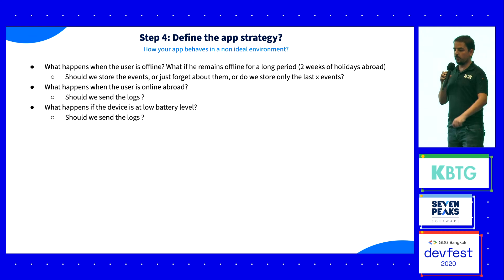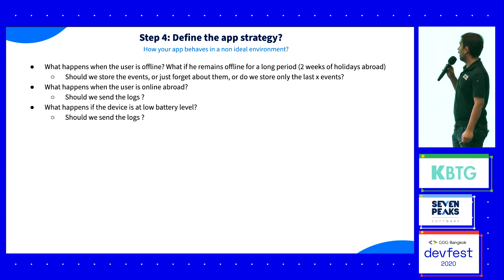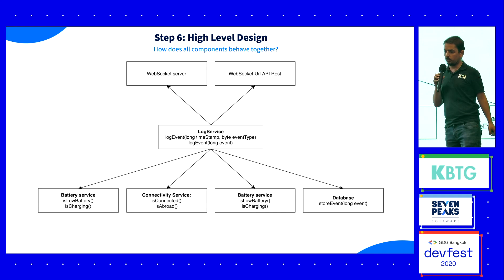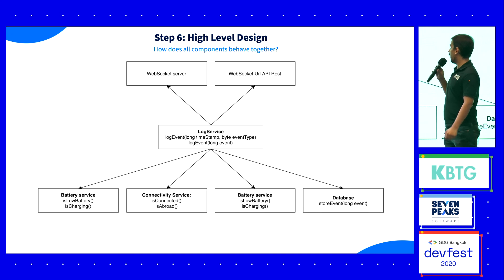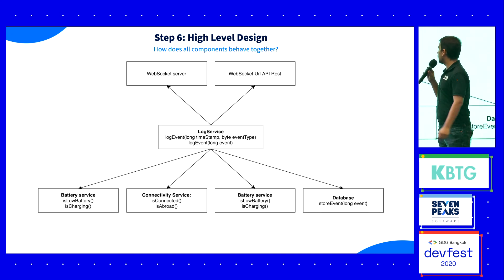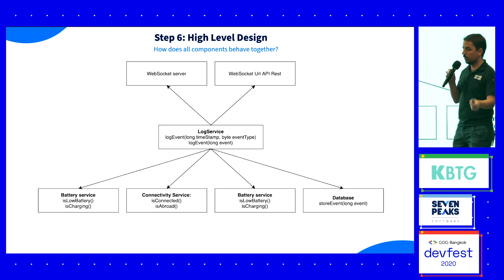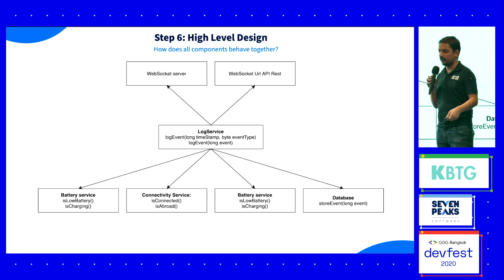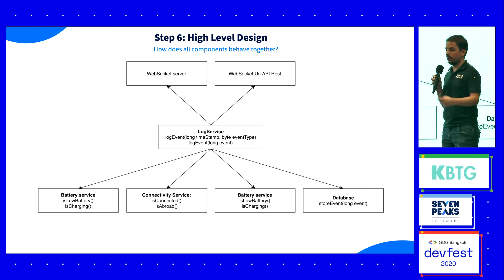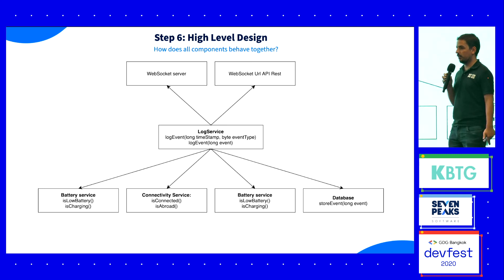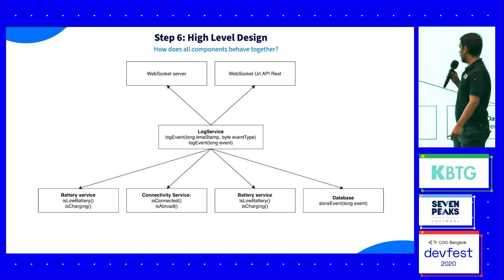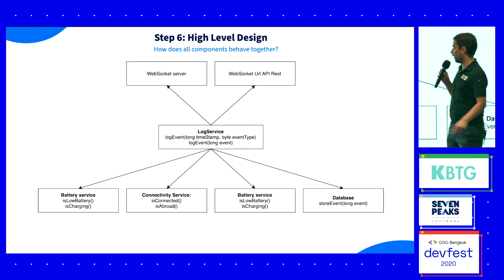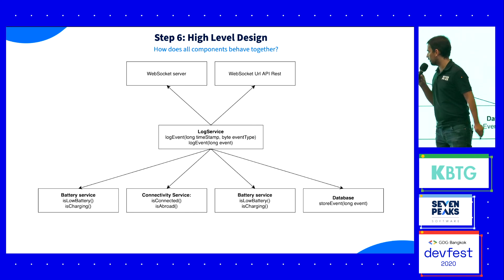The last step is to define your high-level design. Here you have all your components: log service, WebSocket server, and a URL REST API for load balancing. You also have other services that your app will use: battery service, connectivity service, and a database.